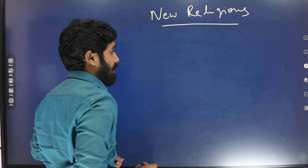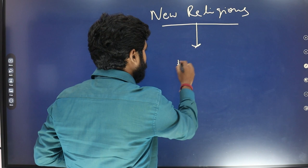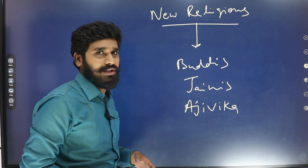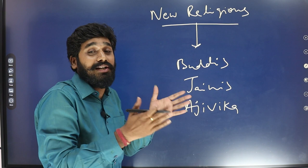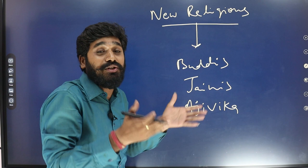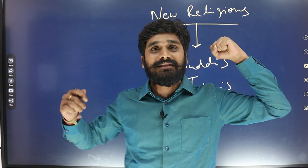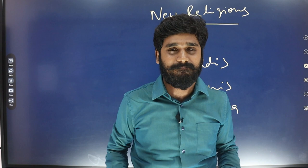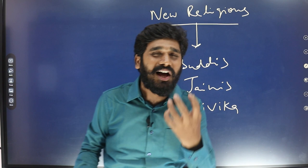After the Aryan civilization, new religions emerged — Buddhism, Jainism, and the Ajivika religion, among others. About 64 new religions existed in the 6th century BC, according to Satyanada Iyer. These new religions created a great revolution in Indian society.